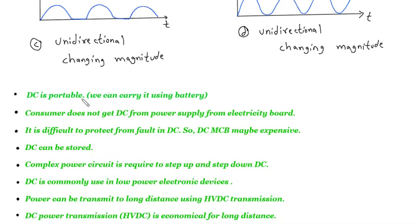DC is portable. We can carry it using battery. Consumer does not get DC from power supply from electricity board, but it is difficult to protect from fault in DC.